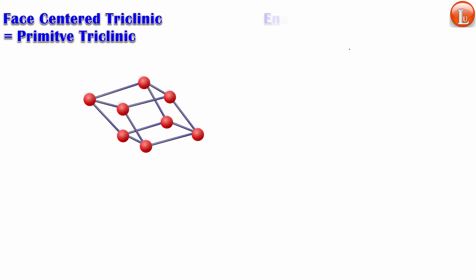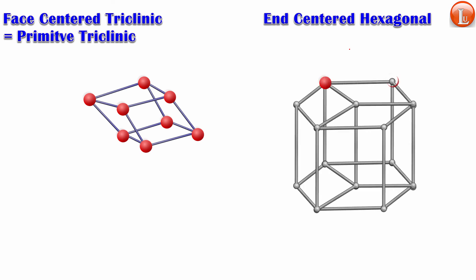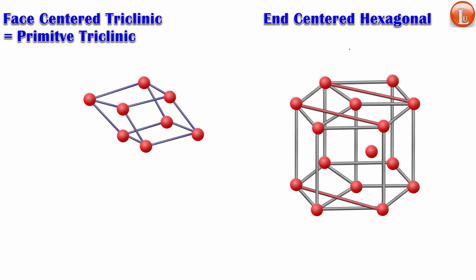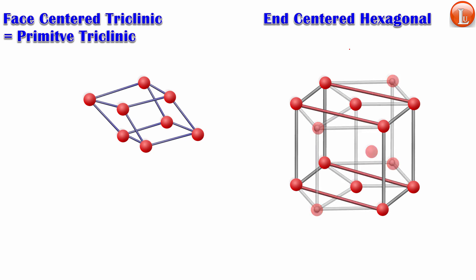End-centered hexagonal doesn't exist either. This is end-centered hexagonal, and its equivalent is end-centered monoclinic — a smaller alternative unit cell can be found within it.